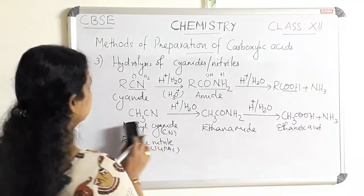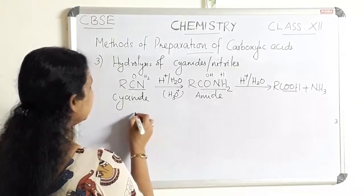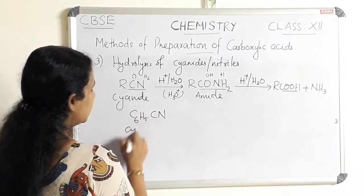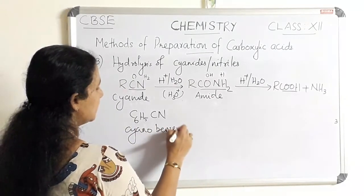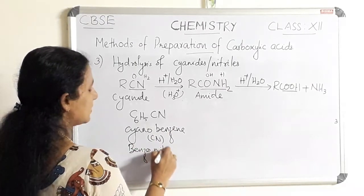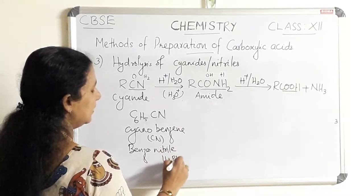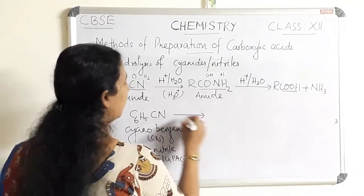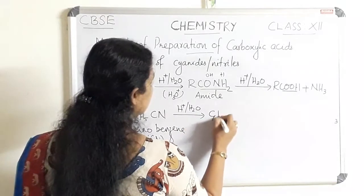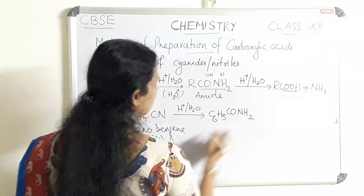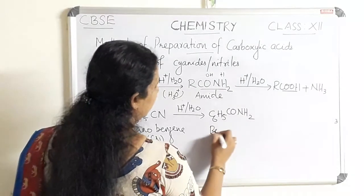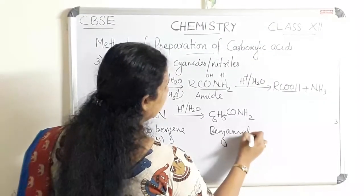We can write one more example using an aromatic compound: C₆H₅CN. This is called cyanobenzene — that is the common name — and benzonitrile is the IUPAC name. Cyanobenzene on hydrolysis with H⁺/H₂O gives C₆H₅CONH₂. CONH₂ is the functional group of amide, so the corresponding amide here is benzamide.